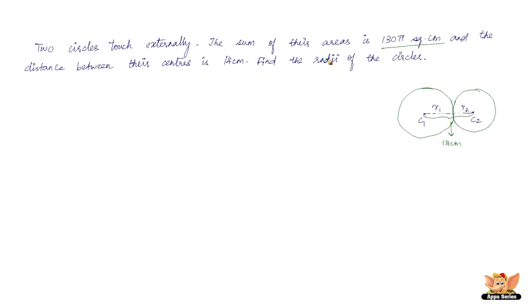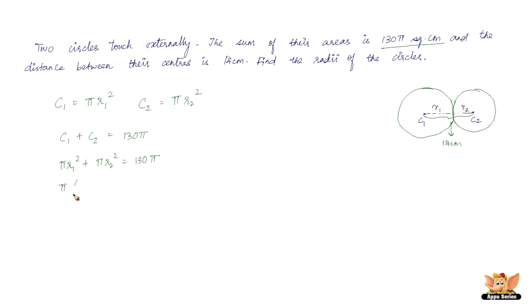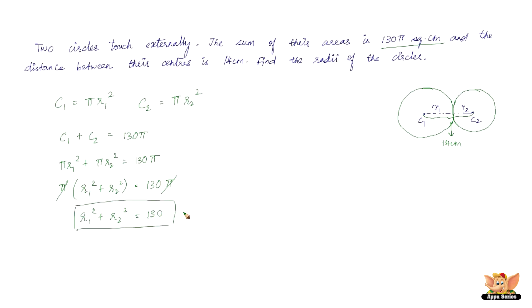We can't just divide 14 by 2 since the circles aren't the same size. Area of C1 is πr1² and area of C2 is πr2². Since C1 plus C2 equals 135, taking π as common: π(r1² + r2²) = 135. Cancelling π on both sides gives r1² + r2² = 130. That's our first equation.